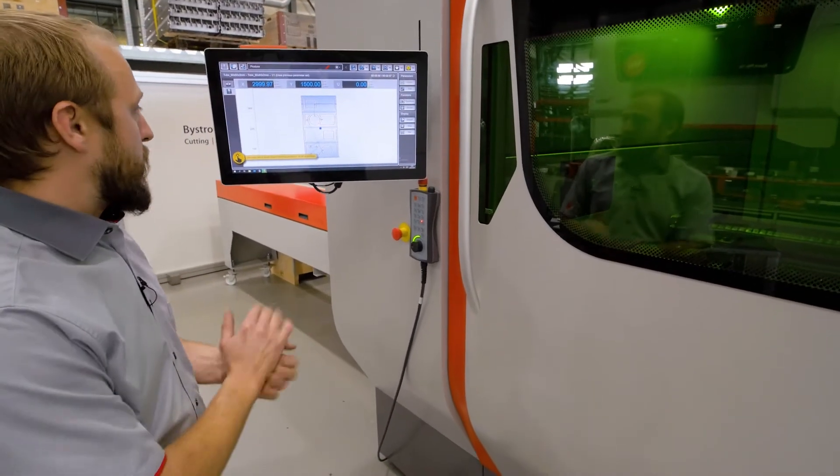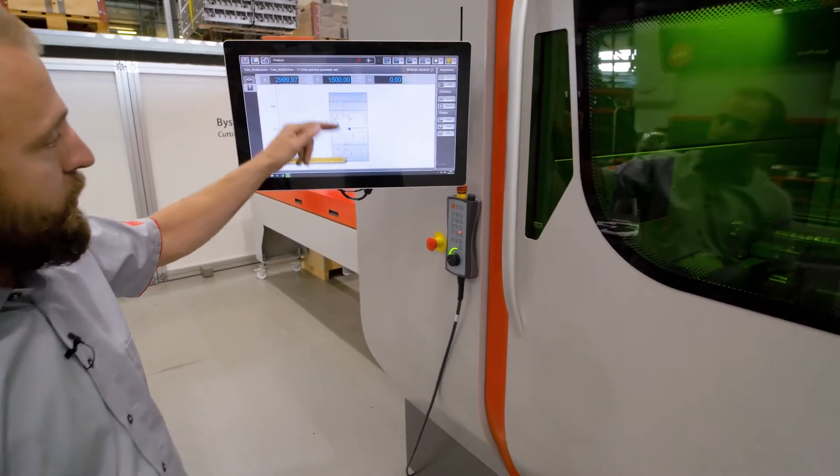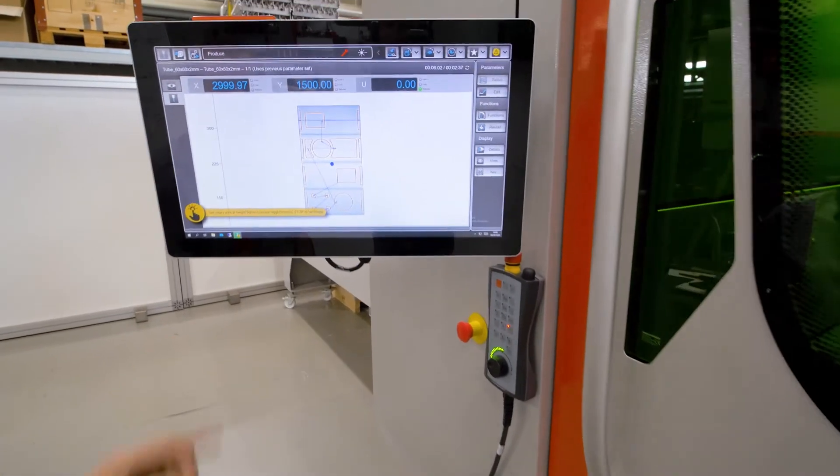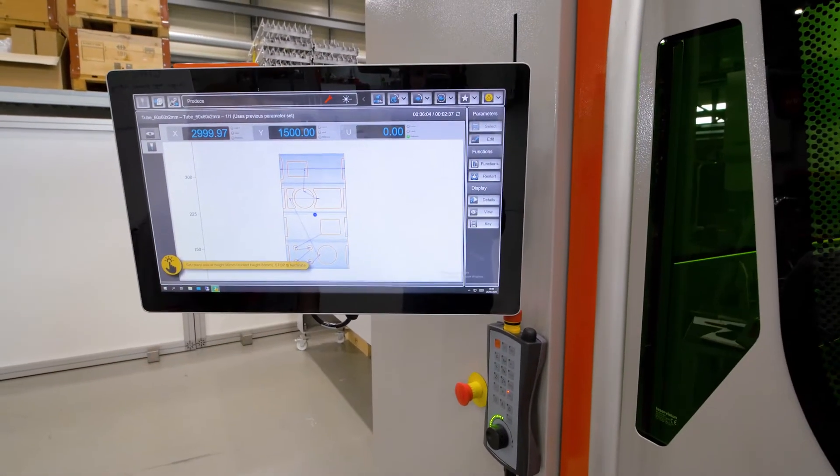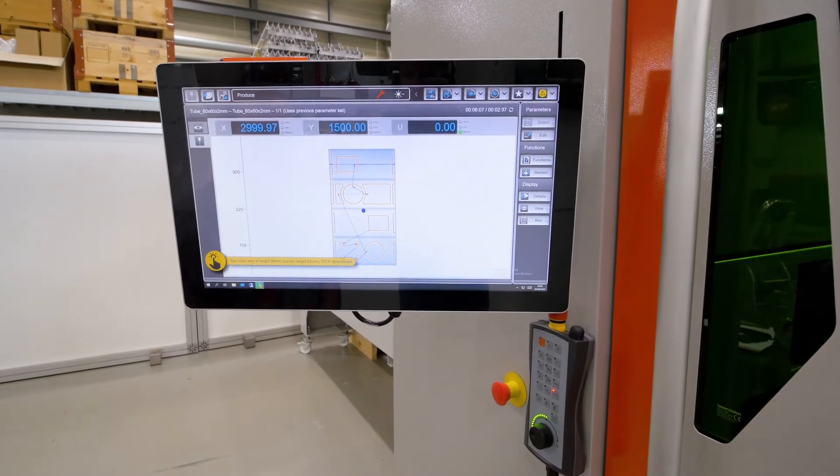Now we have here our cutting plan where you see a square profile. We have an assistant helping us step by step to do this.